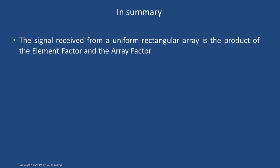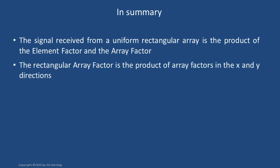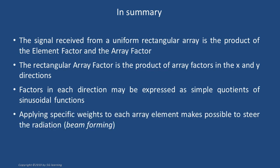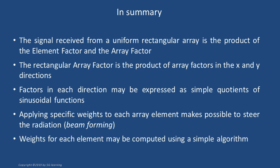To summarize: the signal received from a uniform rectangular array is the product of the element factor and the array factor. The rectangular array factor is the product of the array factors in the x and y directions. Factors in each direction may be expressed as simple quotients of sinusoidal functions. Applying specific weights to each array element makes possible to steer the radiation — beamforming. Weights for each element may be computed using a simple algorithm.